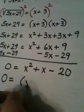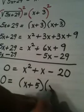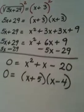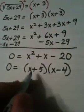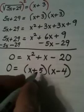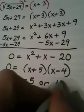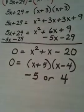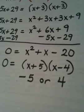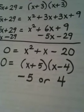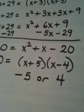That factors as (x plus 5) times (x minus 4). So when I set each one of these to 0, I get x equals negative 5 or x equals positive 4. Now, what we need to do is check those answers.